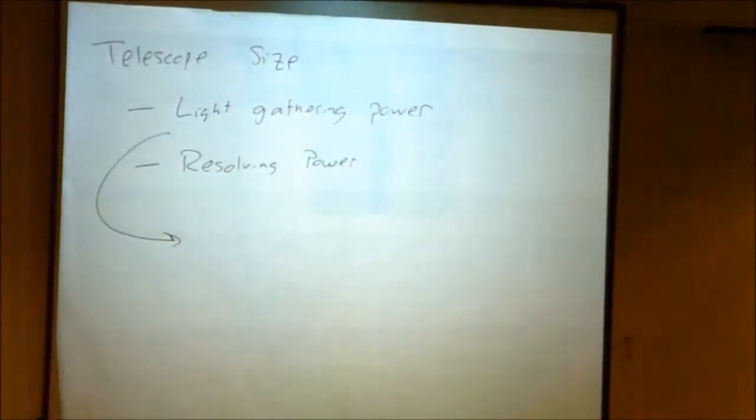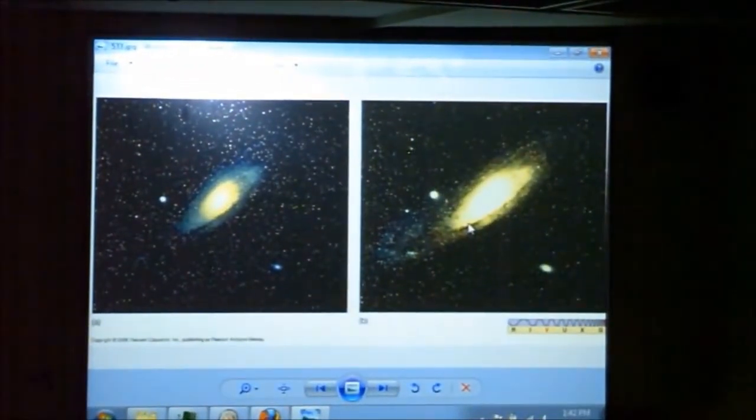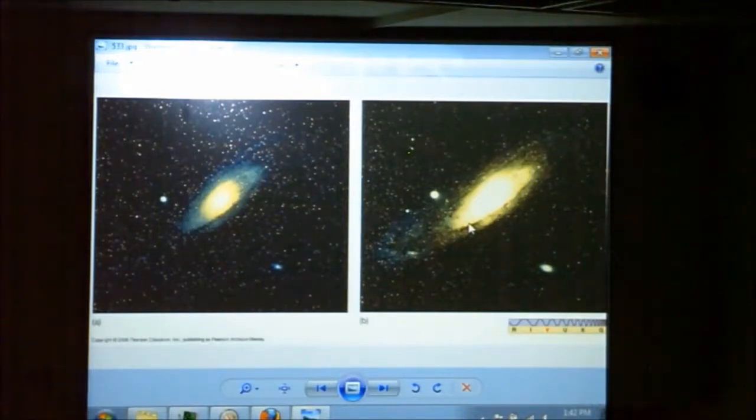So here we have an example. I'll kill the lights here. Two pictures of Andromeda, the Andromeda galaxy, our sister galaxy, nearest big galaxy to us. Both are taken in the same exposure time, maybe a minute or a second, some exposure time. But on different telescopes, where the telescope on the right has twice the collecting area. You can see the same amount of time with more collecting area, you get more light, and so you can start to see the faint outskirts of the Andromeda galaxy. That's the basic idea.